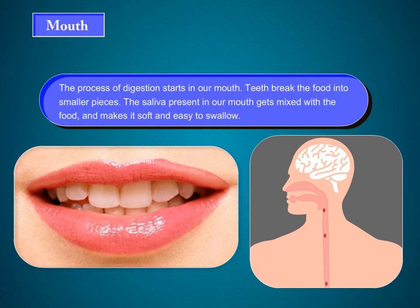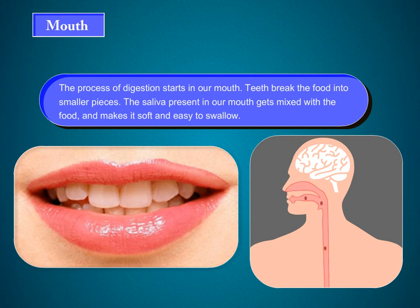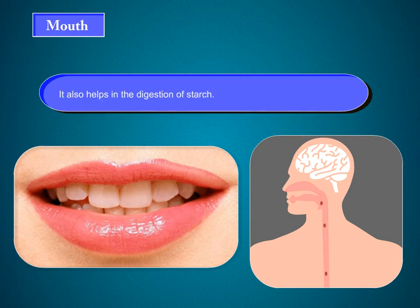Mouth. The process of digestion starts in our mouth. Teeth break the food into smaller pieces. The saliva present in our mouth gets mixed with the food and makes it soft and easy to swallow. It also helps in the digestion of starch.